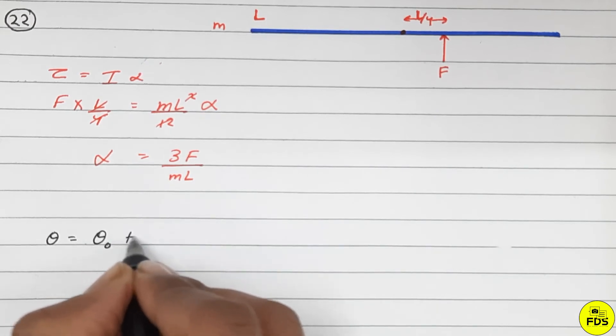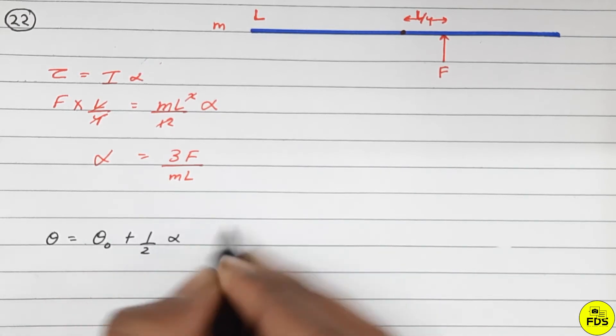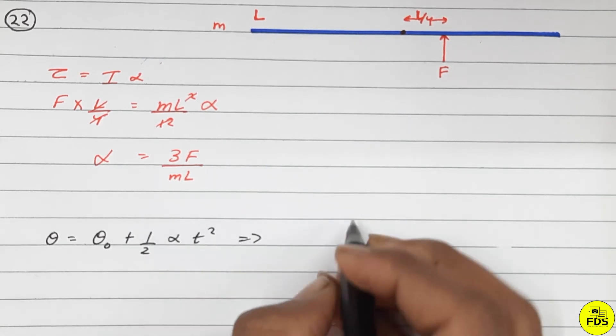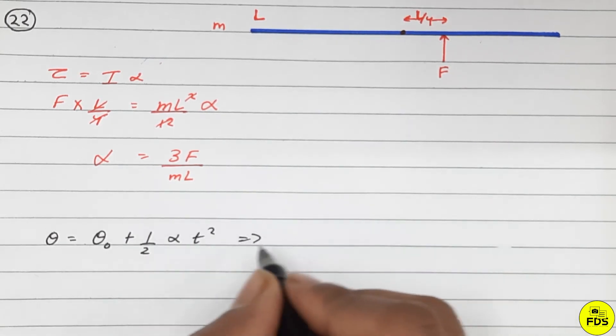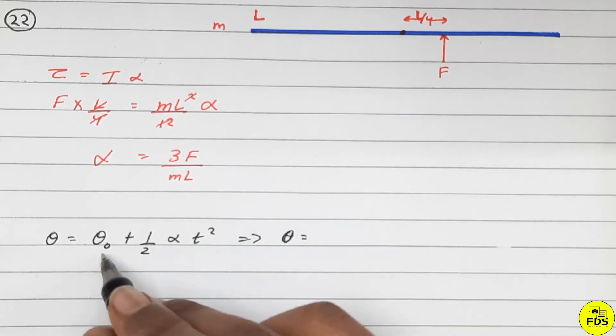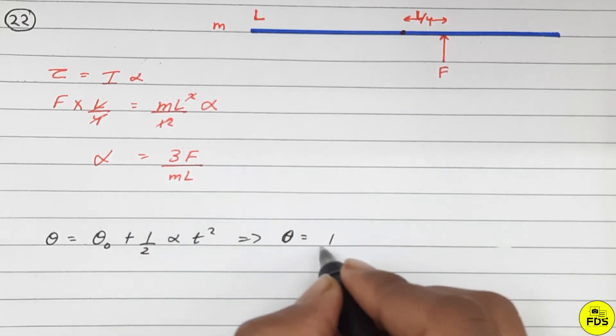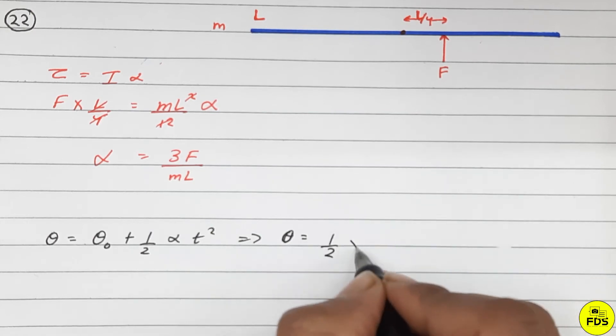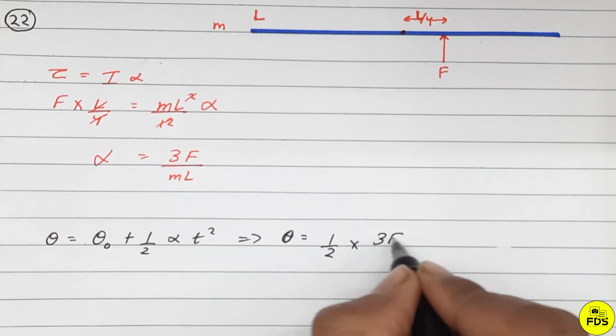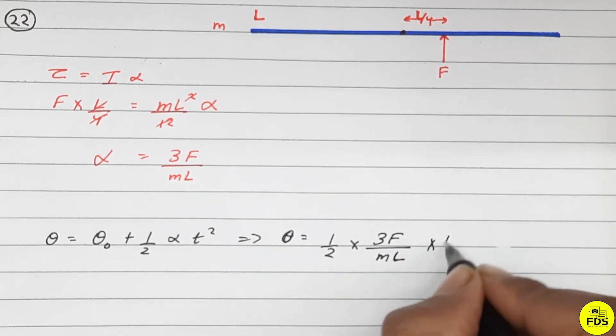Now to find theta, we use theta equals theta naught plus one by two alpha t squared. Initially at rest, theta naught is zero. So theta equals half into alpha value, which is 3F upon mL, into t squared.